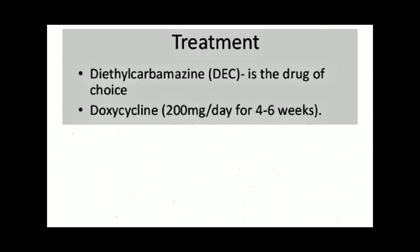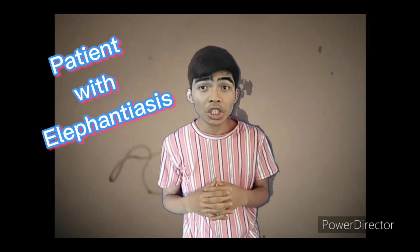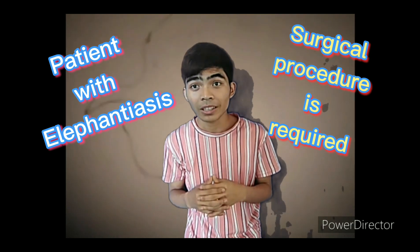Now let's talk about the treatment. Diethylcarbamazine is the drug of choice. A patient must take doxycycline 200 mg per day for 4 to 6 weeks. Levamisole hydrochloride has also been used for the treatment of Bancroftian filariasis, Brugia malayi, and tropical pulmonary eosinophilia. Ivermectin has shown great promise in the treatment of filariasis and eosinophilic lung. However, in patients with elephantiasis, surgical procedures are required as chemotherapy cannot reverse the fibrotic changes.